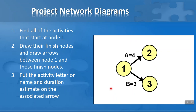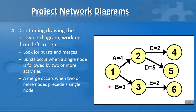Let's see how we build up a project network diagram step-by-step. We start by finding all the activities that start at node number one. In this instance, two activities start there — both activities A and B can start at the same time. Activity A ends at node number two, and activity B ends at node number three. We draw the finished nodes and the arrows between them: one to two for activity A, and one to three for activity B. We then put the letter and duration estimate on the associated arrow — activity A is four days long, and activity B is three days long. We continue drawing the network diagram working from left to right.